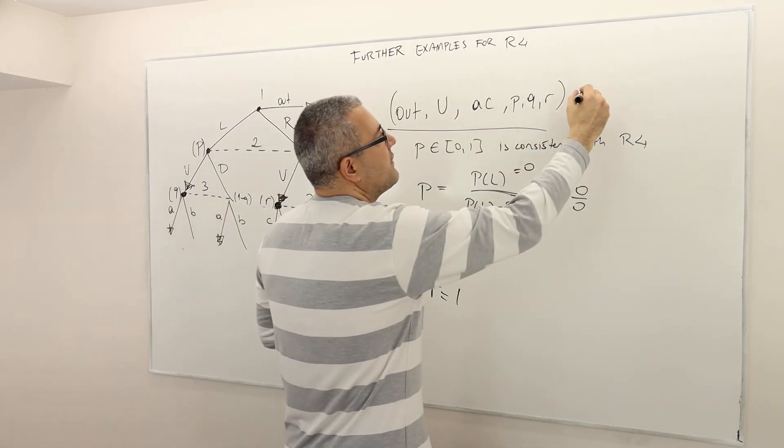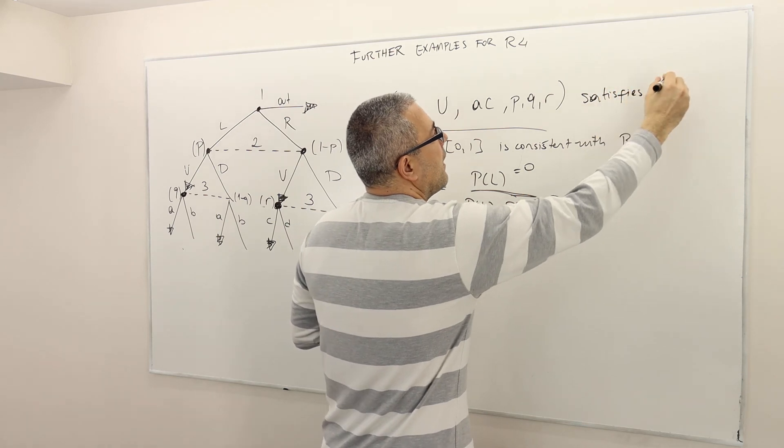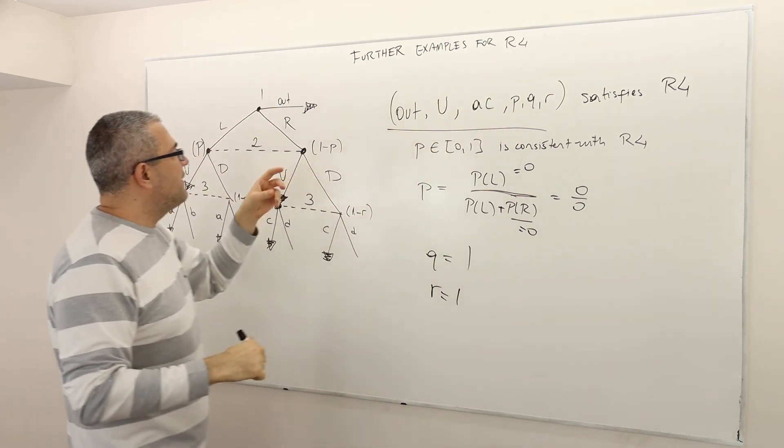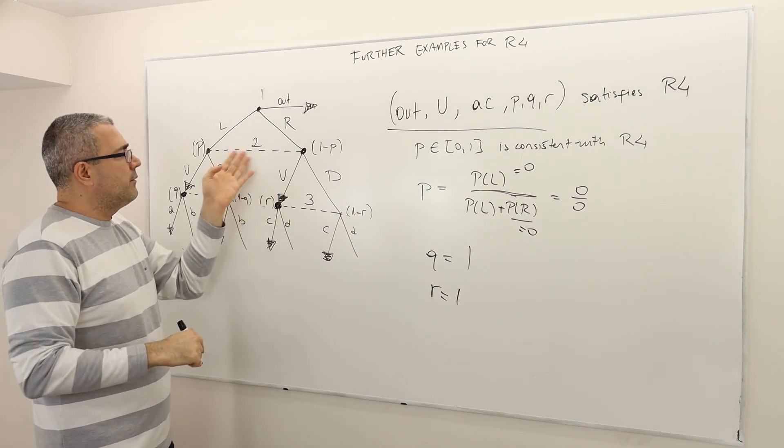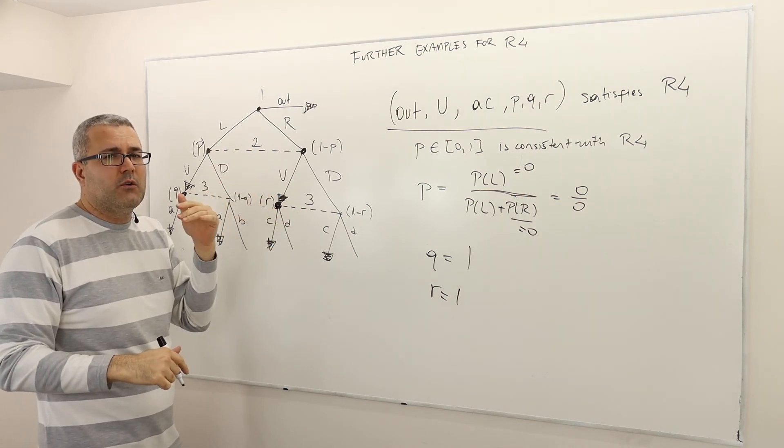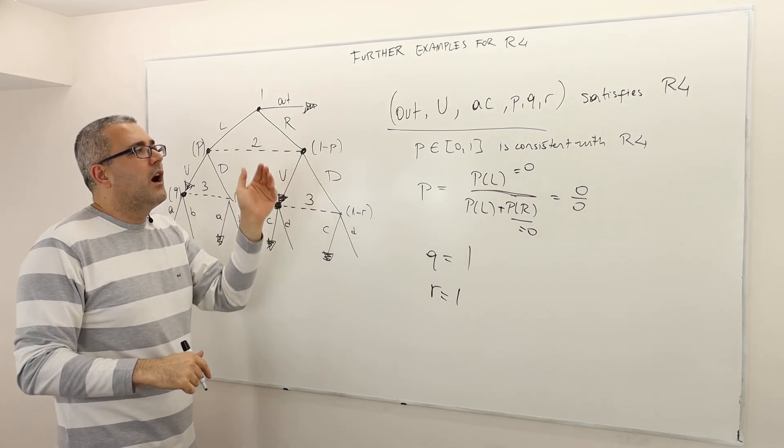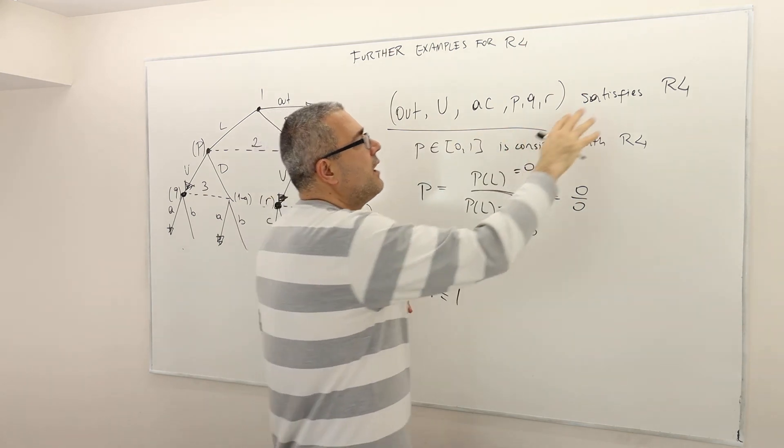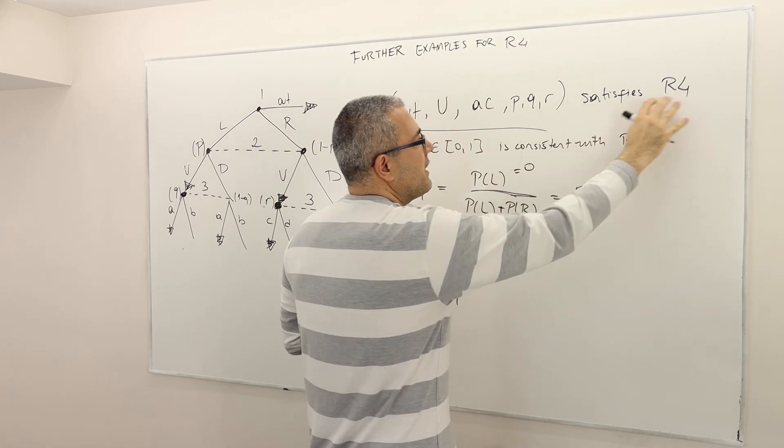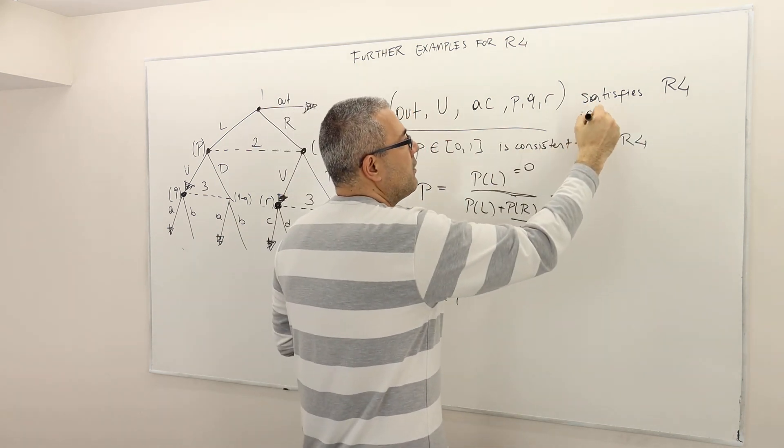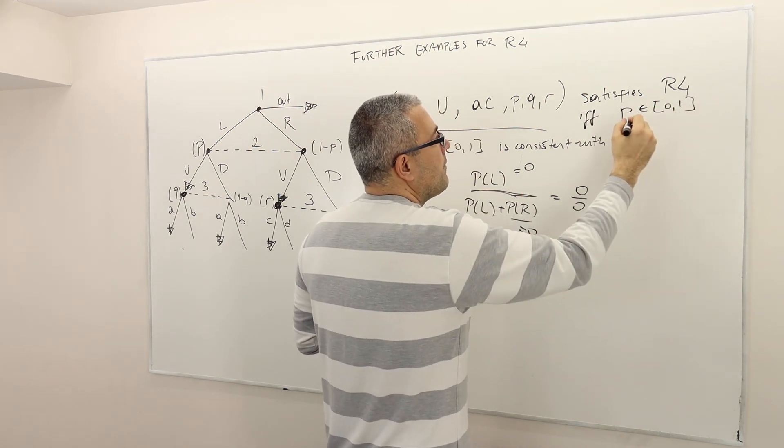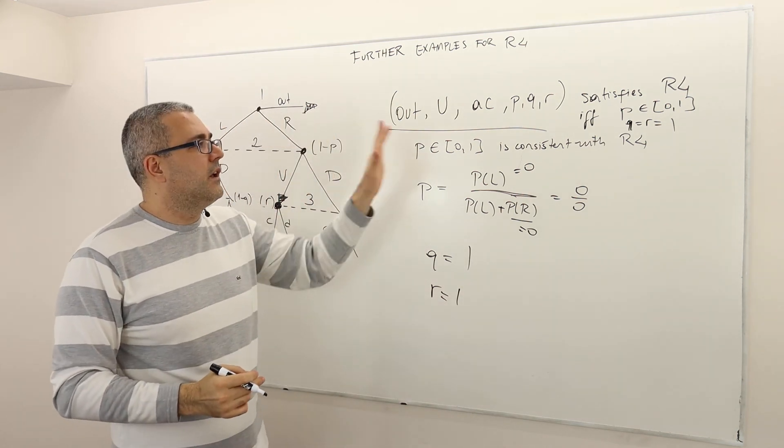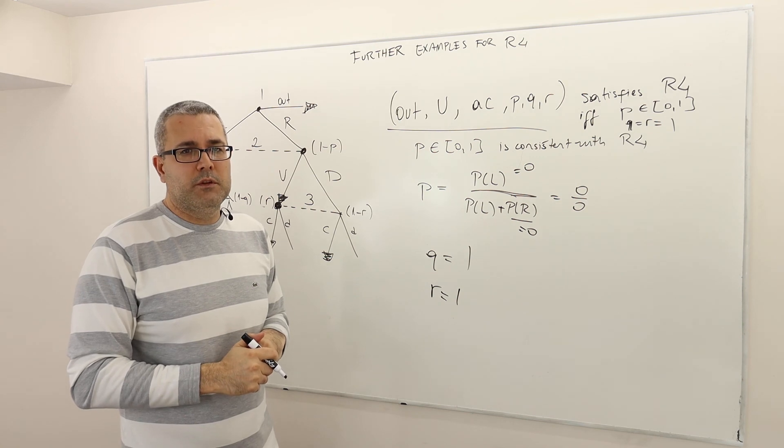This strategy profile satisfies R4. R3 is out of question because this strategy profile basically leaves 2 and 3 information sets off the equilibrium path. And so R3 is not valid here. R4, however, is valid because these are off the equilibrium path info sets. But this strategy profile satisfies the requirement 4 if and only if P is a number between 0 and 1, and Q and R both are equal to 1. Otherwise, it is going to violate requirement 4.